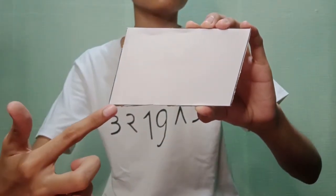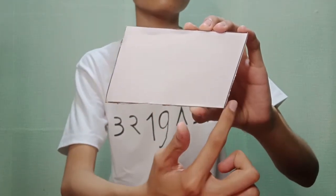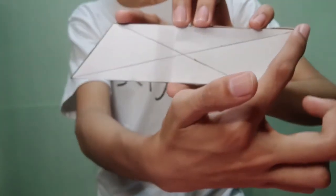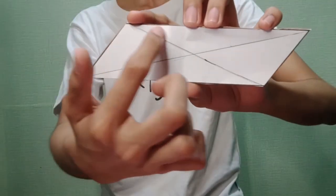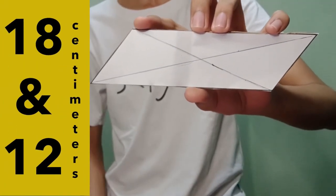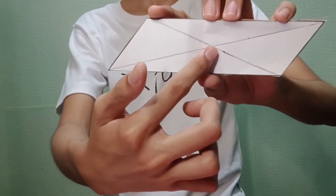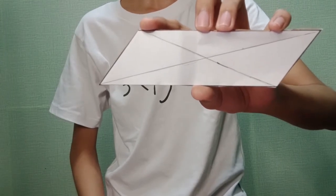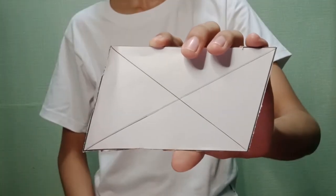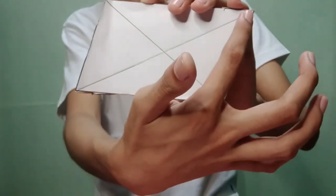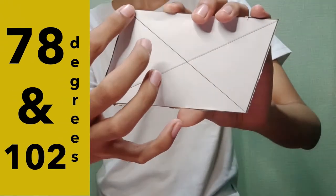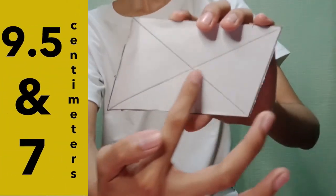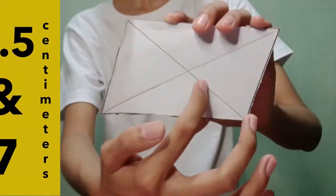Next, we will draw a diagonal to see if the property 'diagonals of a parallelogram bisect each other' is true. First, we will draw two diagonals on parallelogram A and measure each of the line segments. The first diagonal is 18 cm, while the second diagonal is 12 cm. The segments formed on the first diagonal measured 9 cm each, while the segments on the second diagonal measured 6 cm each. Next, we will draw two diagonals on parallelogram B and measure each of the line segments. The first diagonal is 14 cm, while the segments formed on the first diagonal measured 9.5 cm each, and the segments on the second diagonal are 7 cm each.